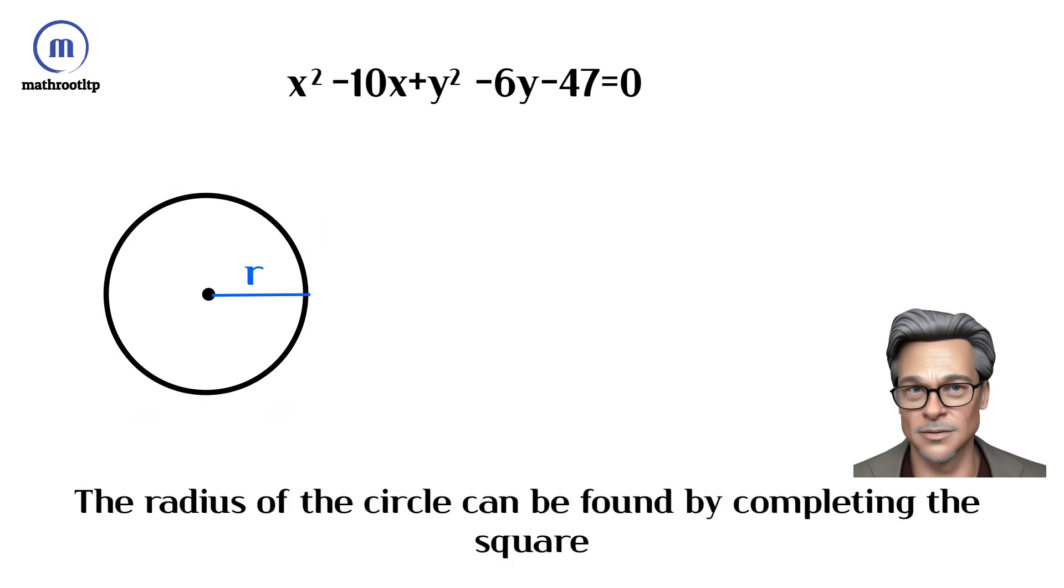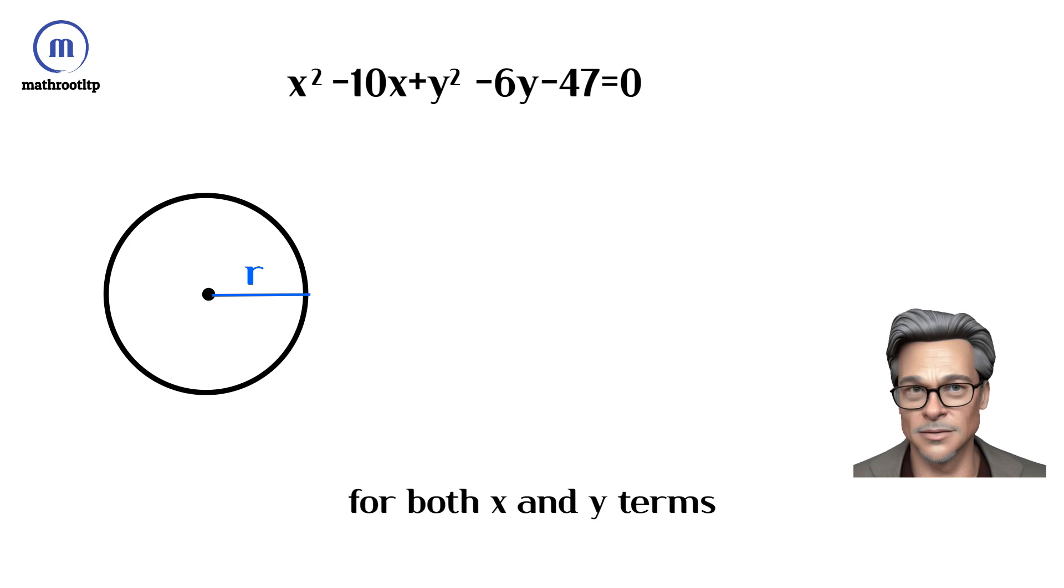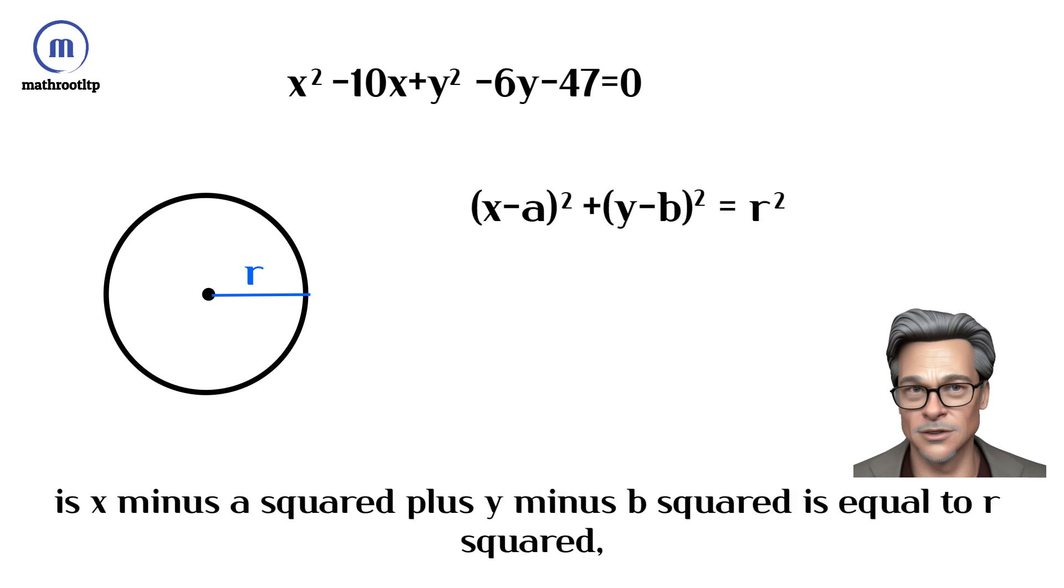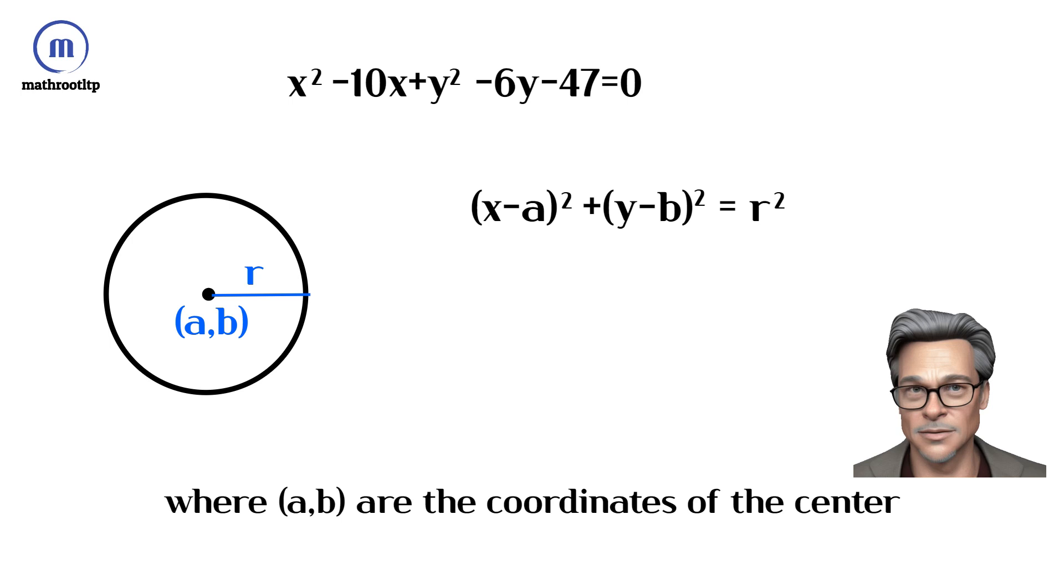The radius of the circle can be found by completing the square for both x and y terms. The standard form of the equation of a circle is x minus a squared plus y minus b squared equals r squared, where a and b are the coordinates of the center and r is the radius.